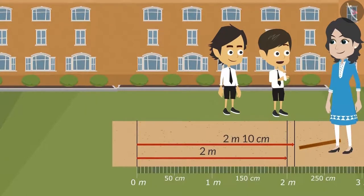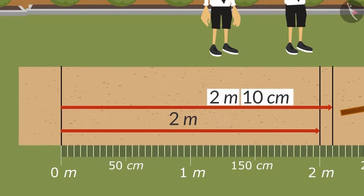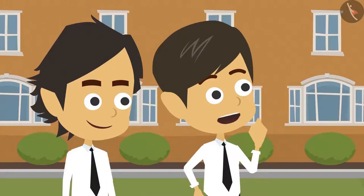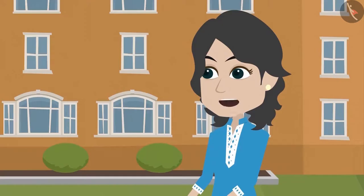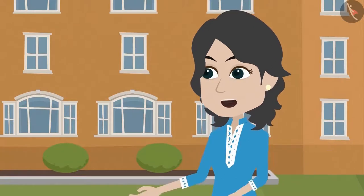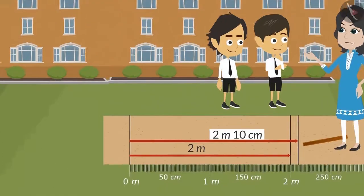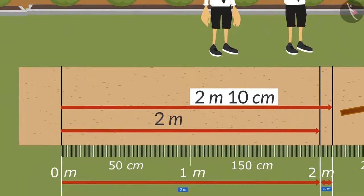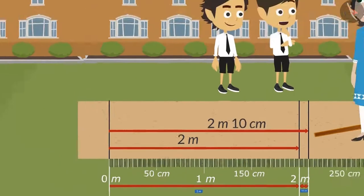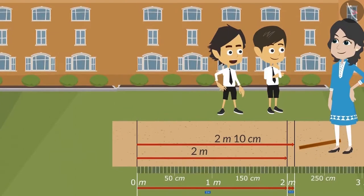2 meters or 10 centimeters? I didn't understand, ma'am. Tell me either in meters or in centimeters. Hey Rayyansh, it is not necessary to tell length in just one unit of measurement. We can write it in two units of measurement as well. For instance, your long jump is 2 meters 10 centimeters — this means that you have jumped a length of 2 meters and 10 centimeters. Now I understand. Rayyansh has jumped just 10 centimeters more.